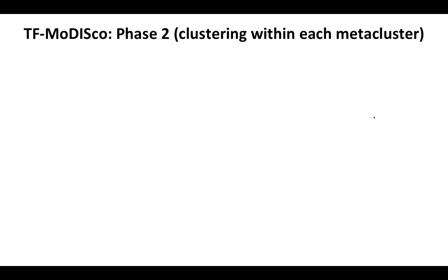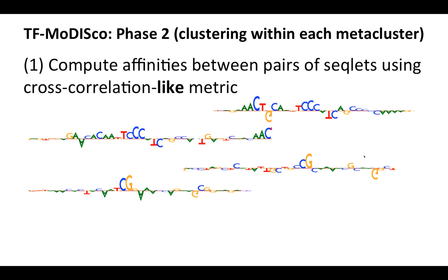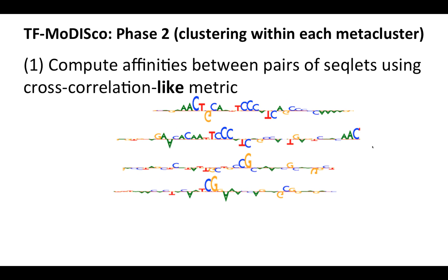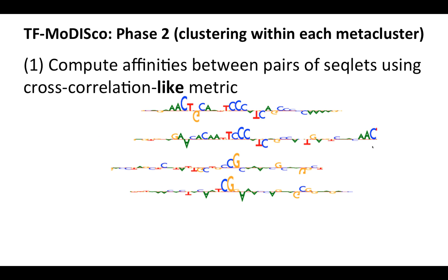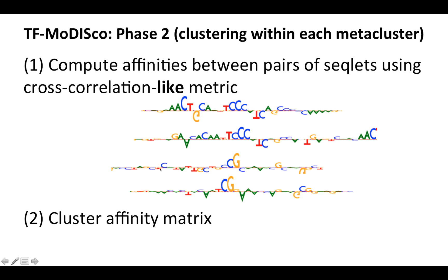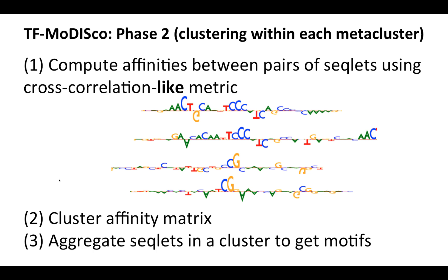The second phase of TF-MoDISco is to perform clustering within each meta-cluster to get our motifs. The first step is to compute affinities between every pair of seqlets using a cross-correlation-like metric. It's like cross-correlation in that we slide the seqlets across each other, look at all the possible alignments, and at every alignment we compute the similarity and take the best similarity across all the alignments — but it's not a correlation that we're doing at every alignment, and I'll talk more about that in a bit. Once we have our affinity matrix, we put that through our favorite clustering algorithm. In this work we use Louvain community detection, like Phenograph, and once we have our clusters, we can aggregate the seqlets within a cluster to get our motifs.